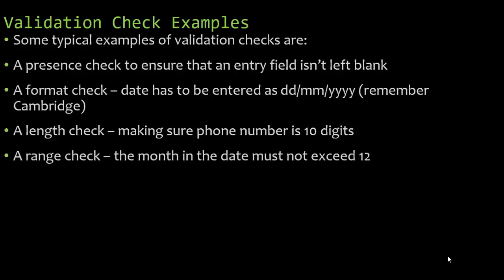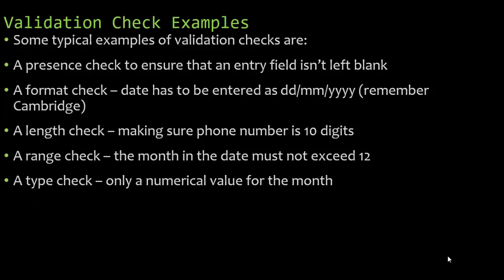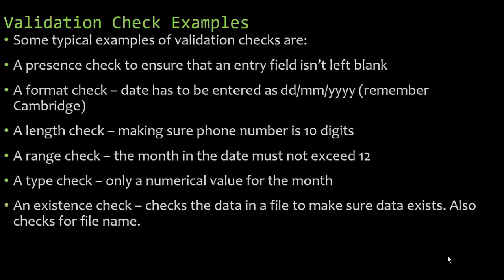A range check ensures the month doesn't exceed 12. For example, a GPA must not be below 0 or above 4.0 — that's a range check. A type check ensures only a numerical value is entered for the month, making sure it's the correct data type — not a string but a number.